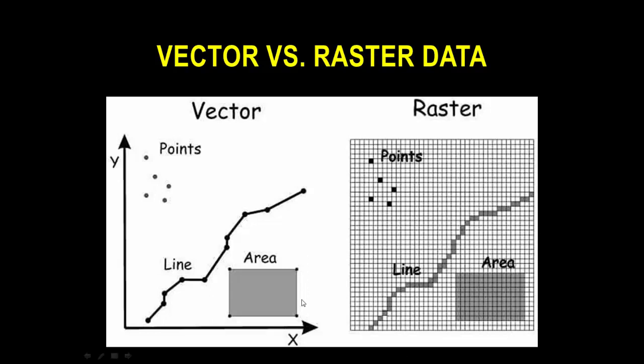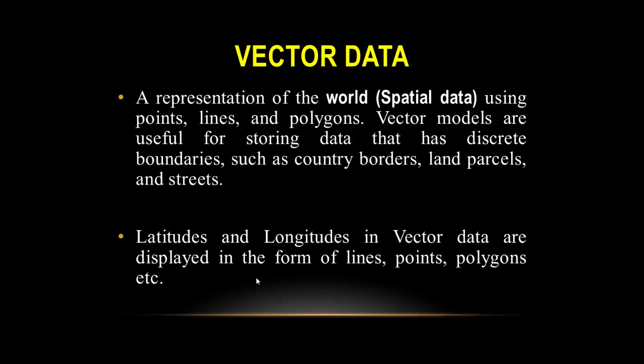Vector data is a representation of the world — spatial data related to an area or place. Vector models use points, lines, and polygons and are useful for storing data with discrete boundaries such as country borders, land parcels, streets, and latitudes and longitudes. Vector data is displayed in the form of lines, points, and polygons.